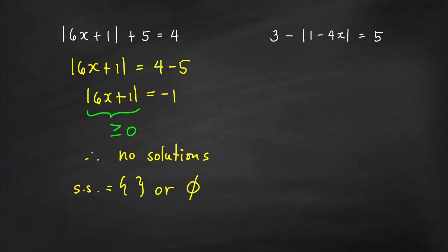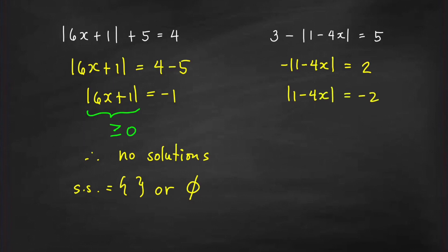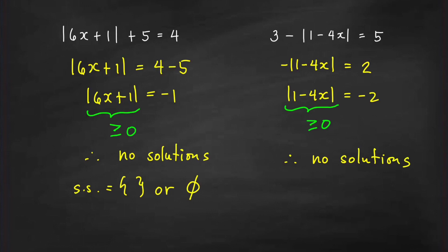For the second absolute value equation, we isolate the absolute value expression. We get −|1 − 4x| = 5 − 3 = 2. Multiplying both sides by negative 1 gives |1 − 4x| = −2. Again, the right-hand side is negative, so it is impossible for this left-hand side to equal a negative number. Therefore, this equation also has no solutions, and the solution set is the empty set.